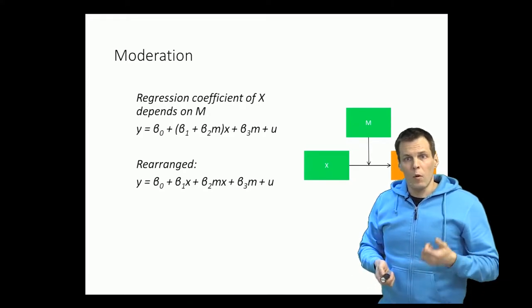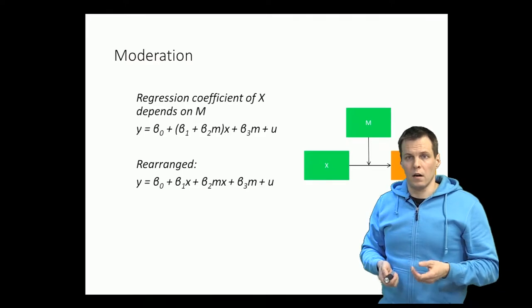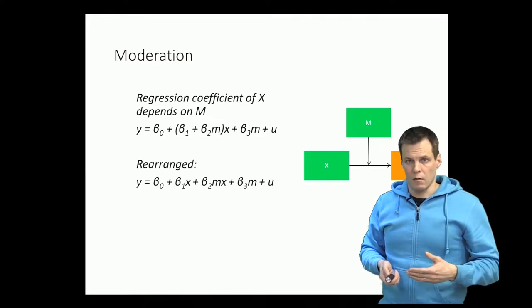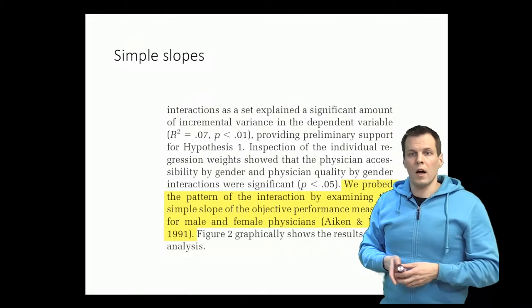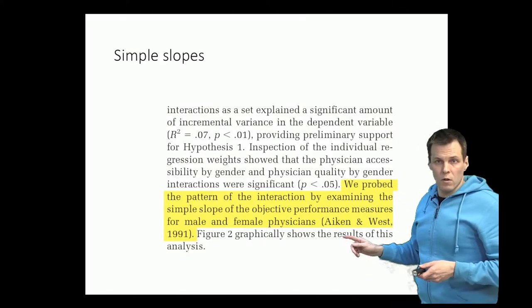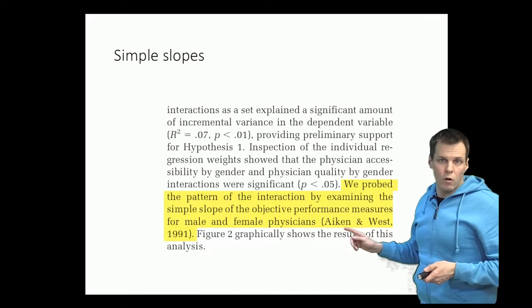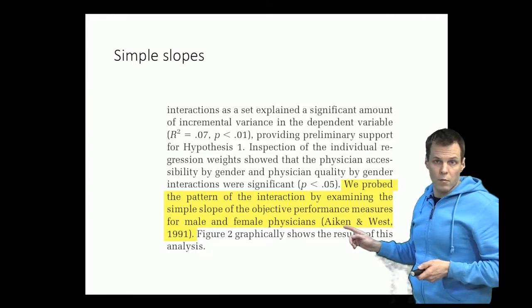So we address this problem by calculating marginal effects or marginal predictions or simple slopes. The idea of a simple slope is that you calculate the regression slope on different levels of the moderation variable.